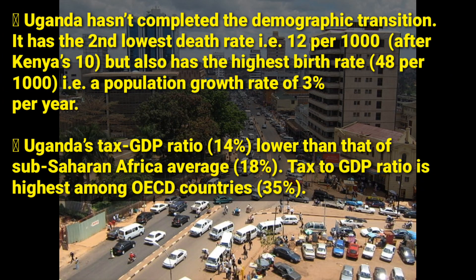Lastly, Uganda's tax-to-GDP ratio is 14%, which is lower than the Sub-Saharan African average of 18%. The tax-to-GDP ratio is highest among OECD countries at 35%, but for Uganda it is still only 14%. That has been Uganda's performance with respect to economic transformation.